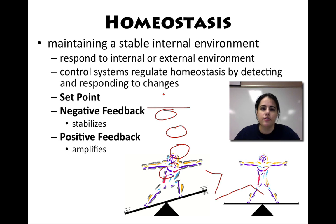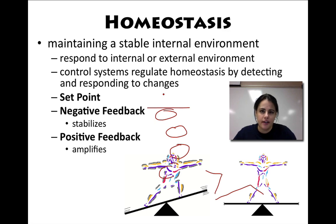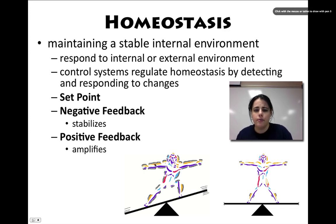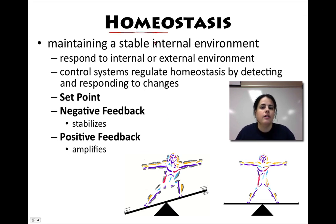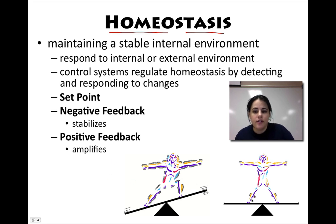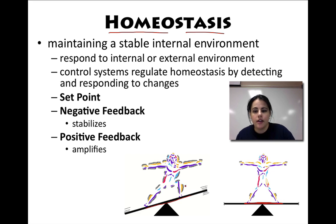Homeostasis is maintaining a stable internal environment. You have to do this by responding to external or internal stimuli. Your body is very good at regulating homeostasis by making sure you're balanced. 'Homeo' means the same, and 'stasis' means standing or steady — so this is a steady state. Anytime your body is out of balance, we say you're out of homeostasis, or you have a homeostatic imbalance. We need to get it back to the balancing point, called the set point.